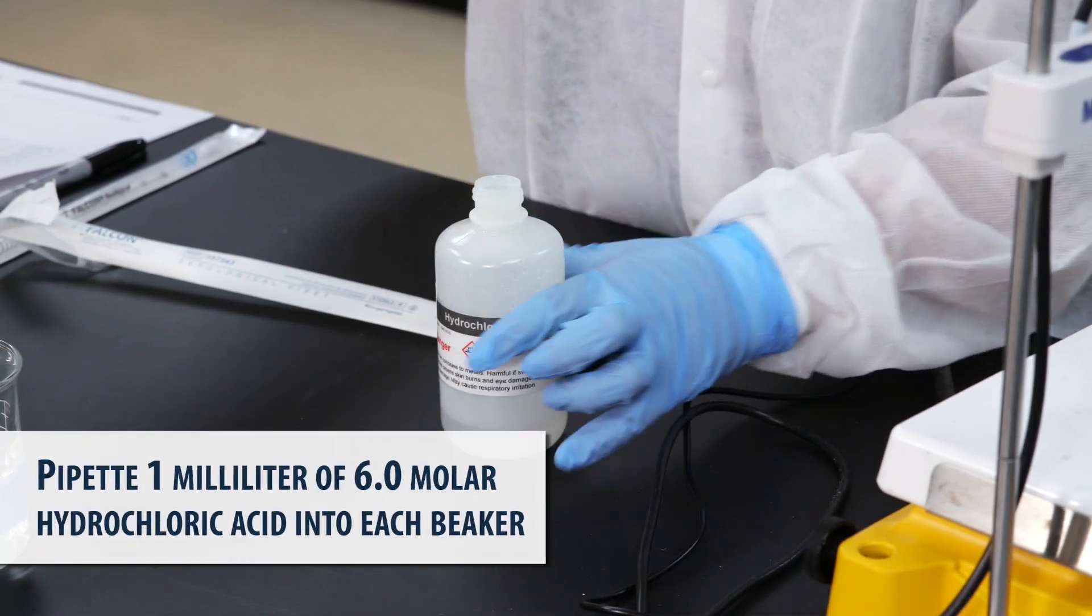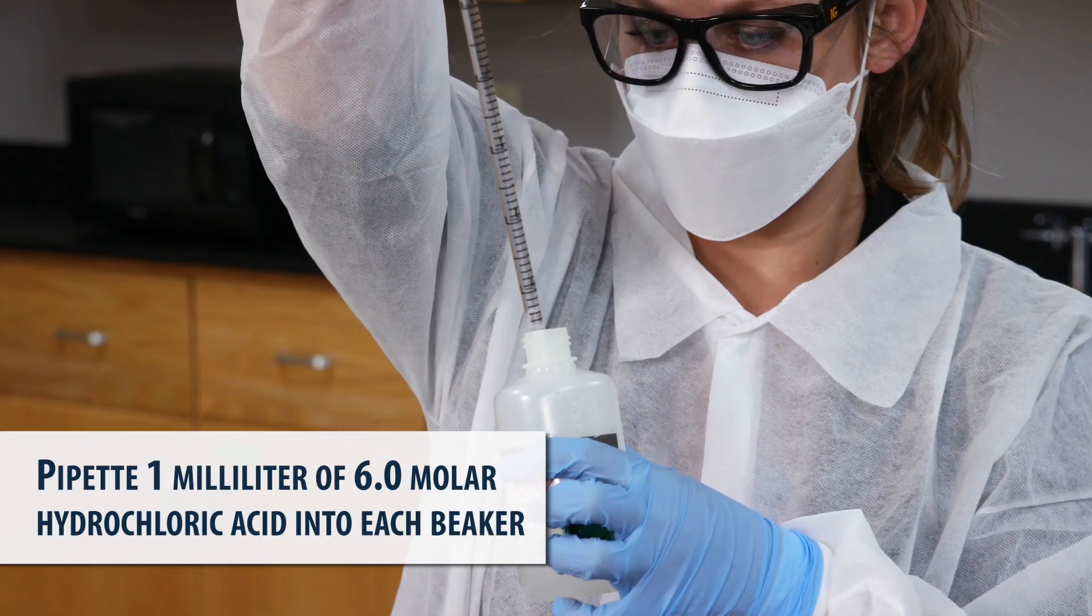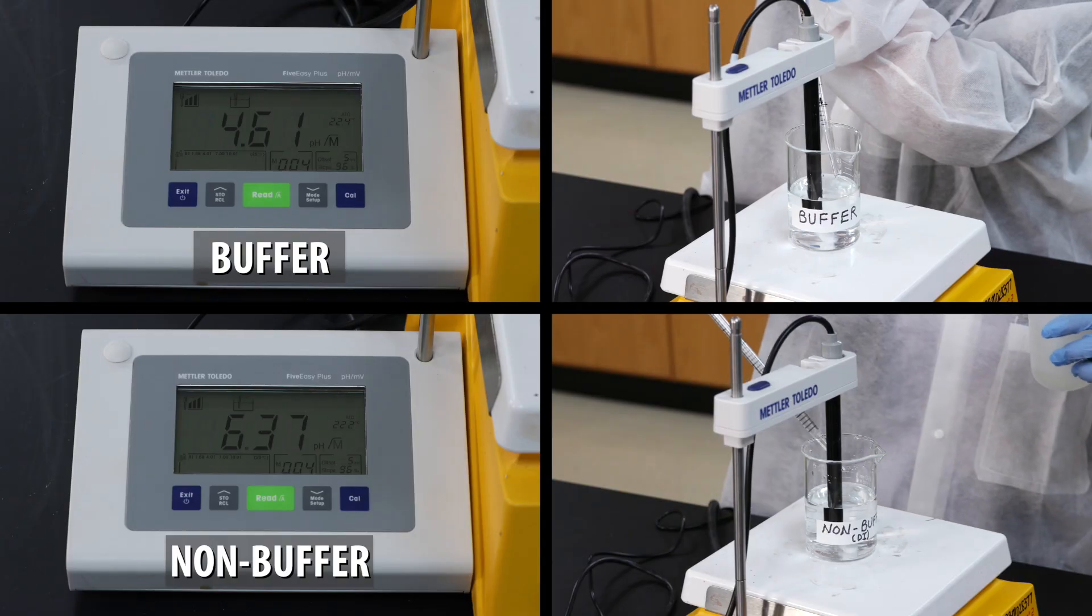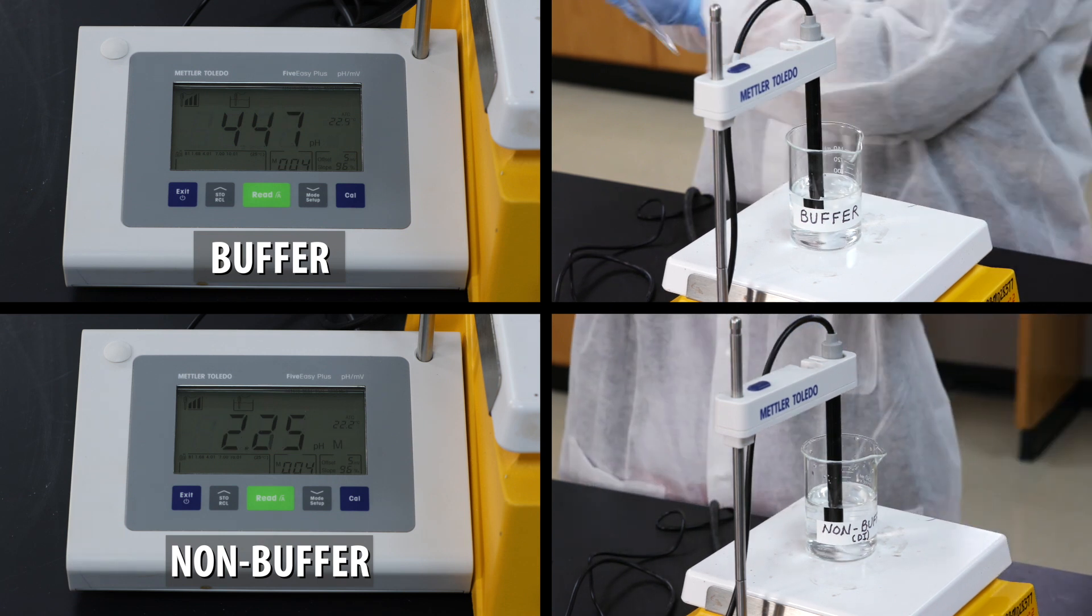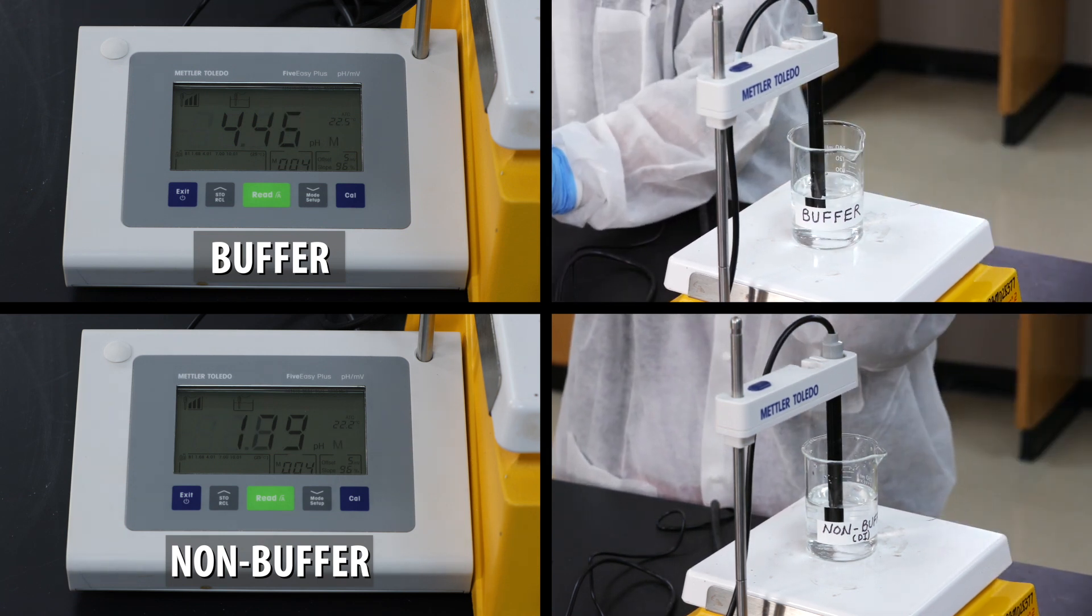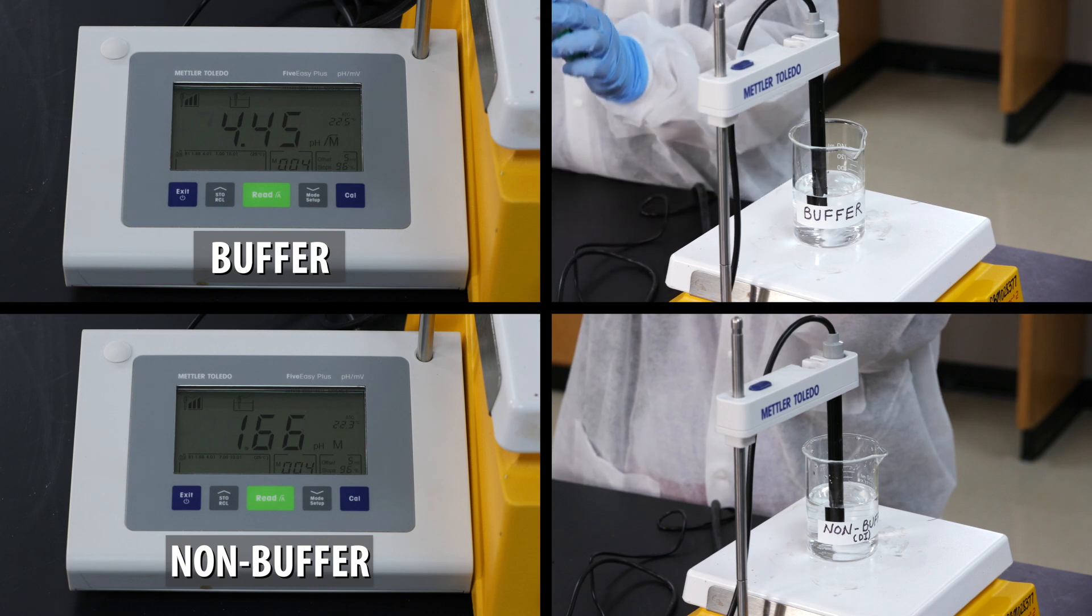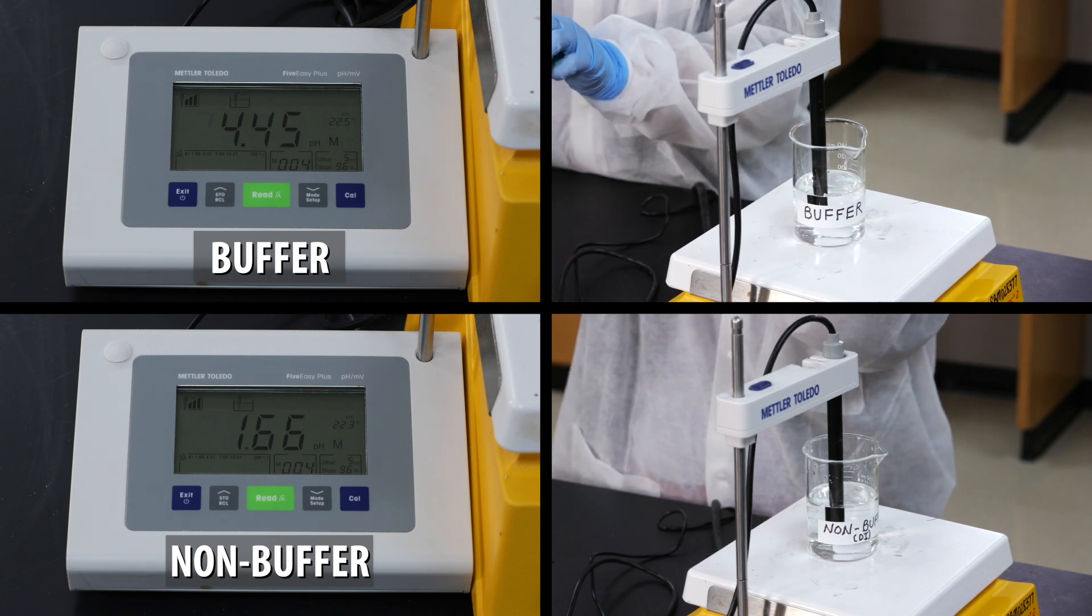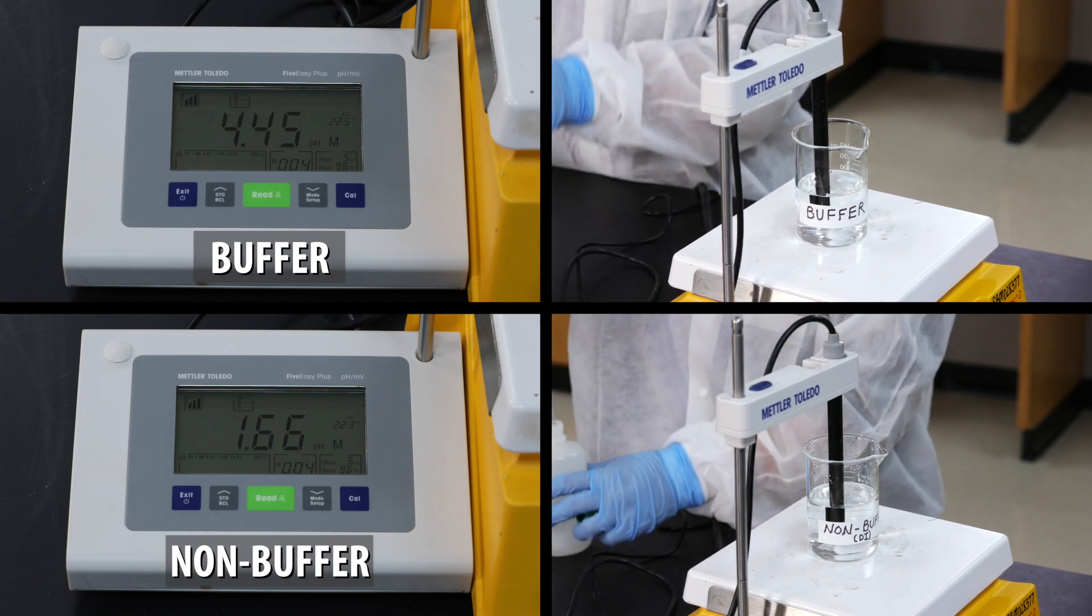Pipet one milliliter of hydrochloric acid into each beaker, and let's watch to see what happens to the pH. Our buffer just barely drops to 4.45, but look at the deionized water. It dropped all the way to 1.66.